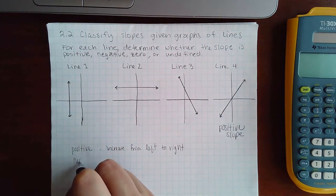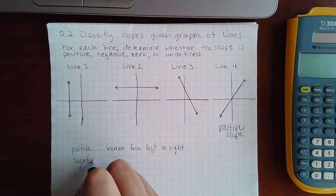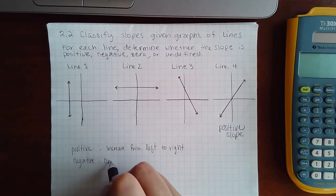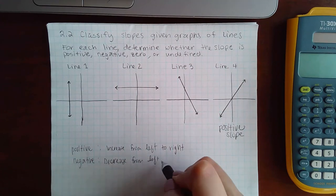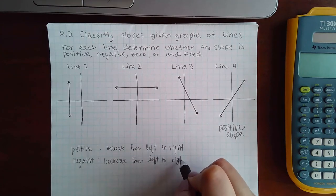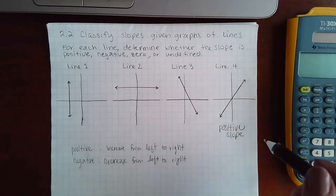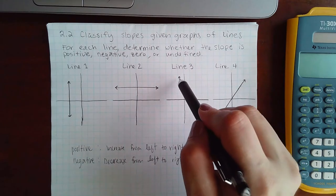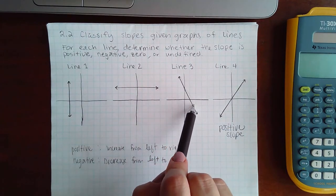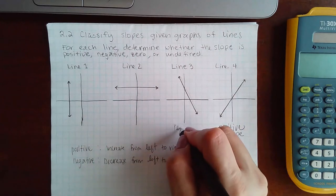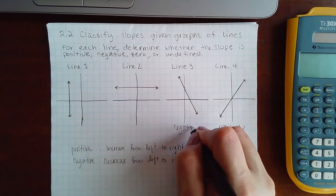Now a negative slope means it's going to decrease from left to right. So if you start on the left and you trace this one, it's going down, which means this one is the graph of a negative slope.